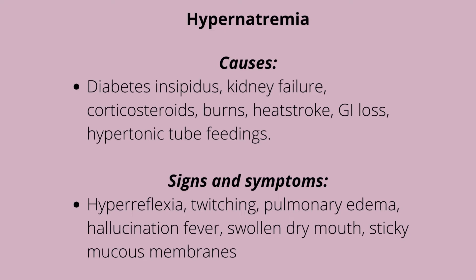Hypernatremia is when somebody has sodium levels above 145. Causes include diabetes insipidus — check our endocrine video — kidney failure, corticosteroids, hypoaldosteronism, dehydration, GI loss, hypotonic tube feedings, burns, and heat strokes. These conditions result in water loss from the body.